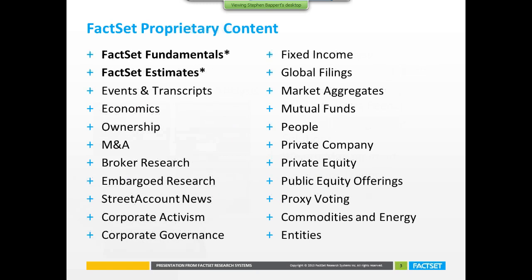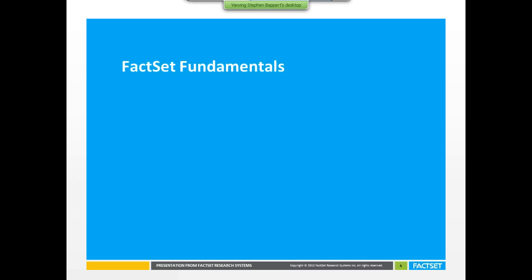FactSet offers a wide range of proprietary content — our goal being to be a one-stop shop for all your analytical work throughout the day. Flagship products include FactSet Fundamentals, FactSet Estimates, Events and Transcripts, Economics, all the way down to Fixed Income, M&A, and private company coverage. I'm going to focus specifically on two product sets where we've made a lot of investment to make the most robust product with unique features that will really power your models and allow some unique testing.